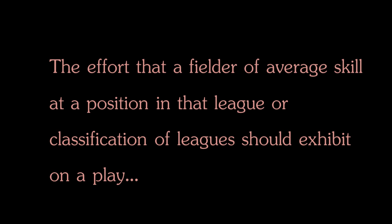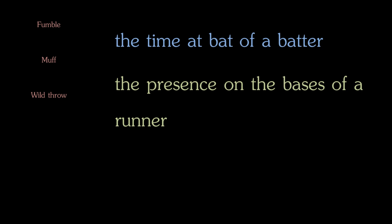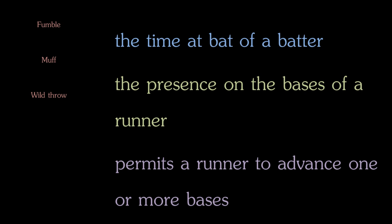A misplay is broken down into three parts: a fumble, which is bobbling a ground ball; a muff, which is dropping either a fly ball or a ball thrown to you by another fielder; and a wild throw, which is pretty self-explanatory. Doing any of those three things must then lead to one of the following: prolong the time at bat of a batter, prolong the presence on the bases of a runner, or permit a runner to advance one or more bases.